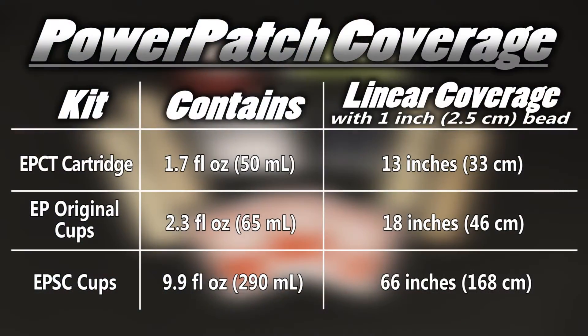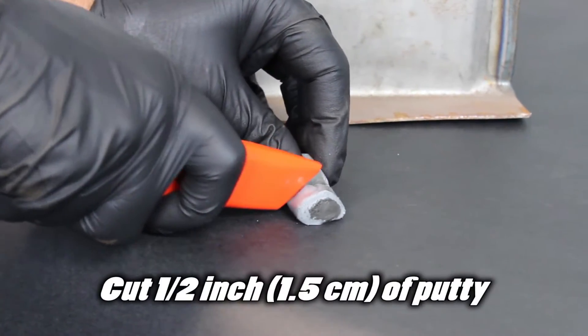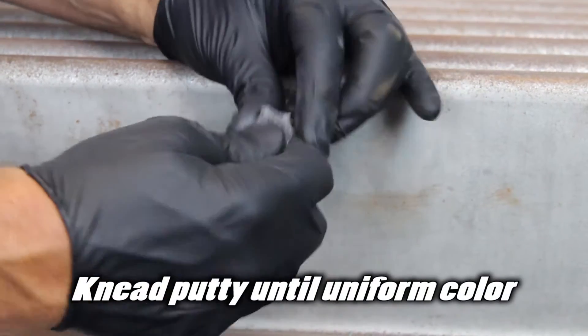Next, determine the amount of power patch needed. Cut about half inch of the putty and knead putty for about one minute until it's a uniform color.